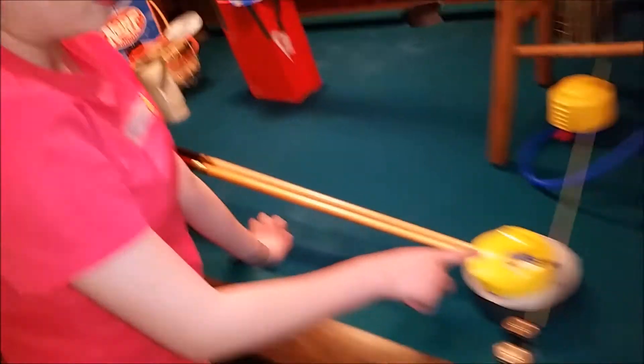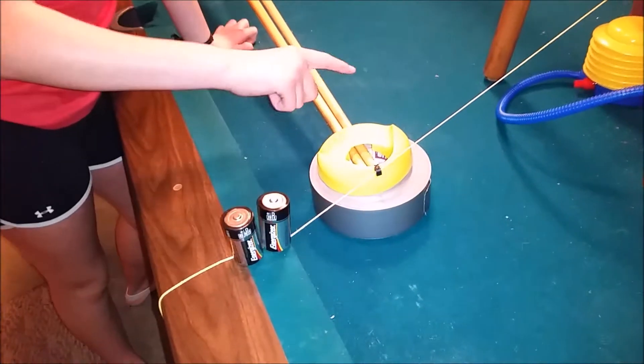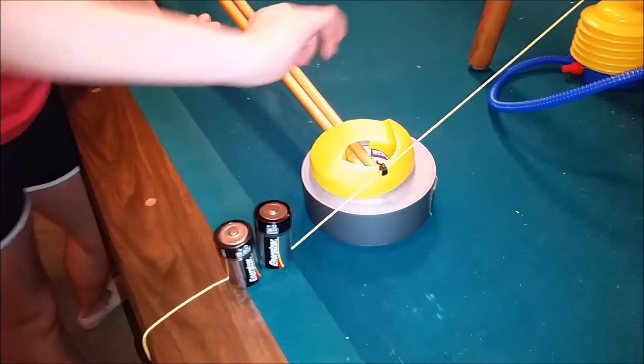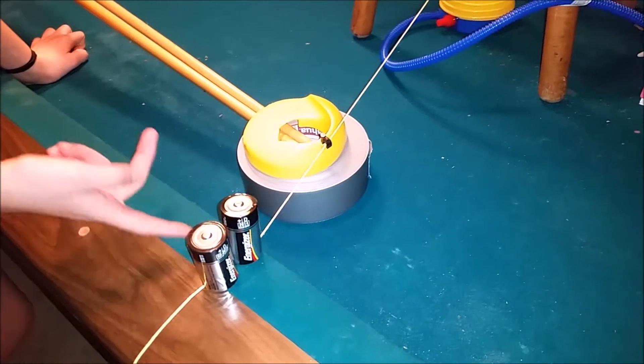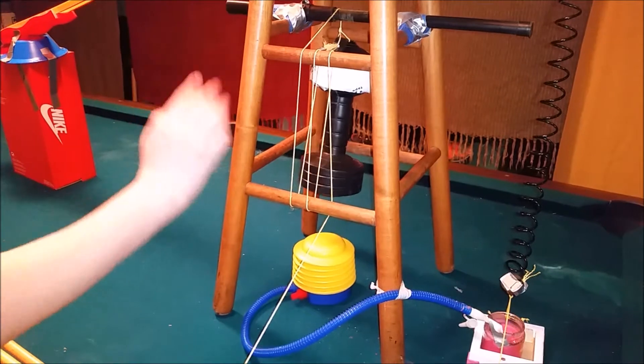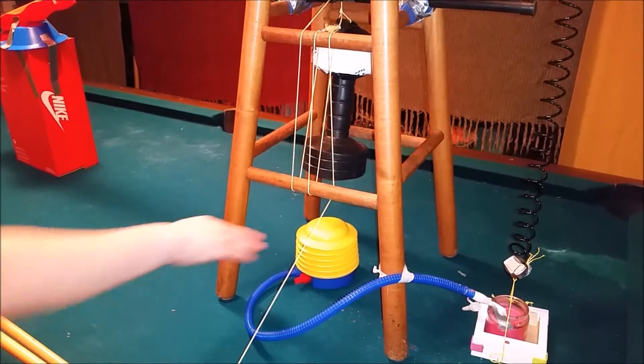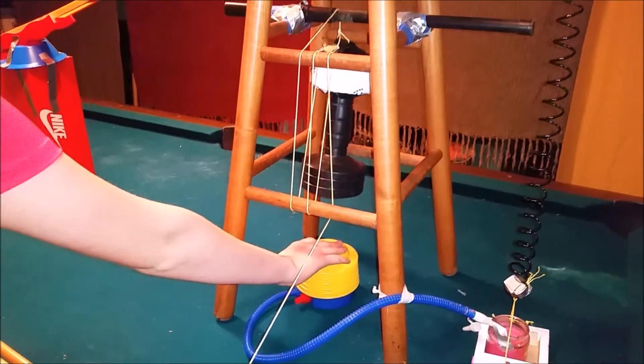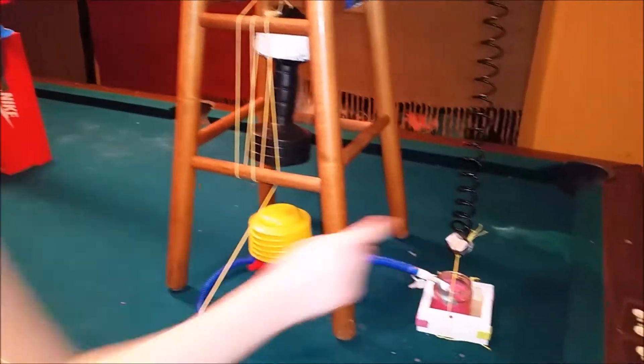Once it rolls down, the ball will hit the string and the string will move, which will move the batteries, making this weight right here fall down. Once the ball hits it, the weight will fall down onto this air pump right here and it'll blow out the candle.